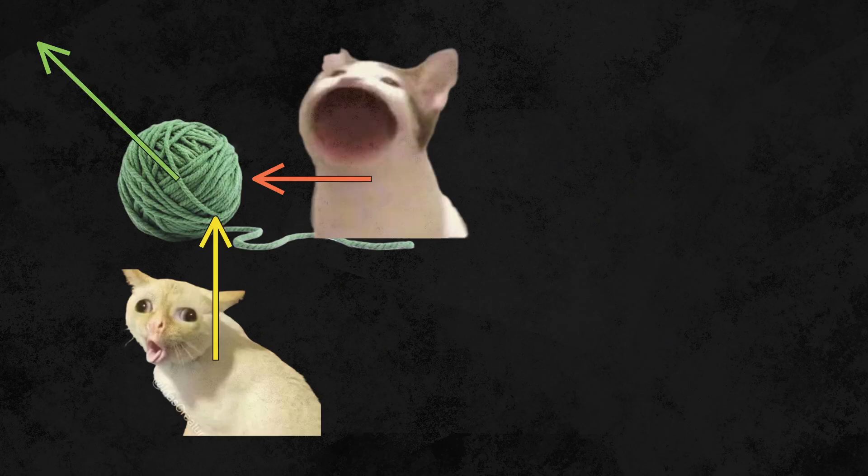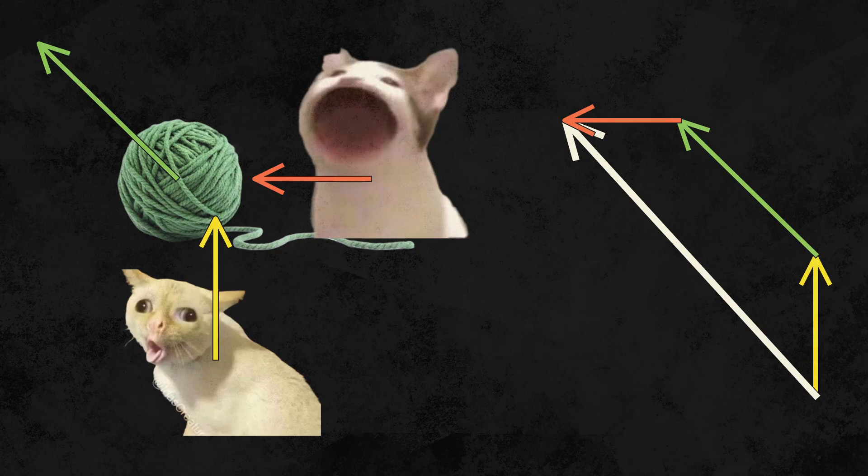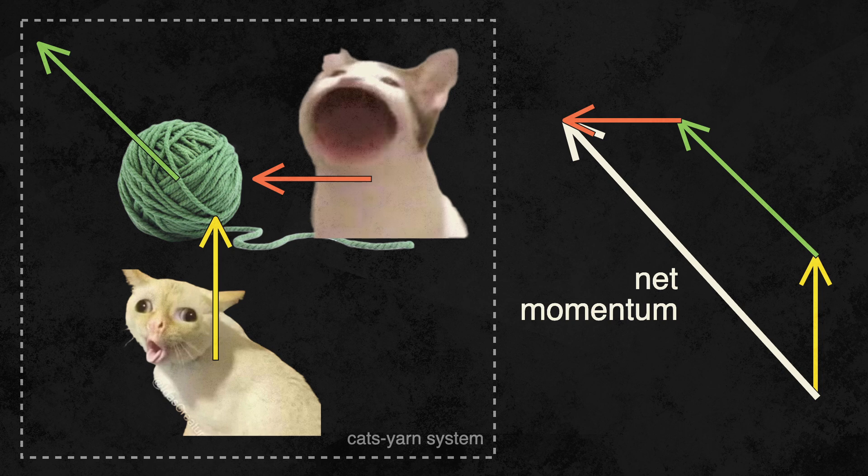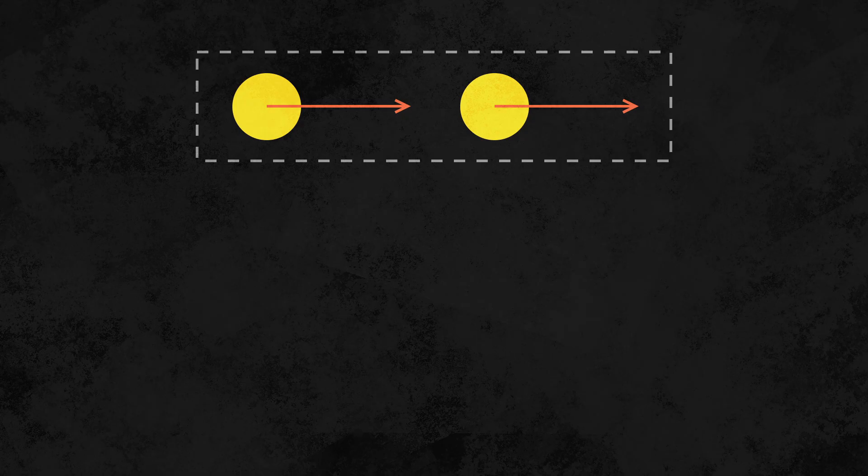We can consider the momentum of an entire system of objects by adding all the momenta of the individual objects tip to tail, just like we do with force. This gives us the net momentum of a system, just like adding all the forces gives us the net force. For example, if a system consists of two objects moving towards the right, their momentum will also be a vector pointing to the right.